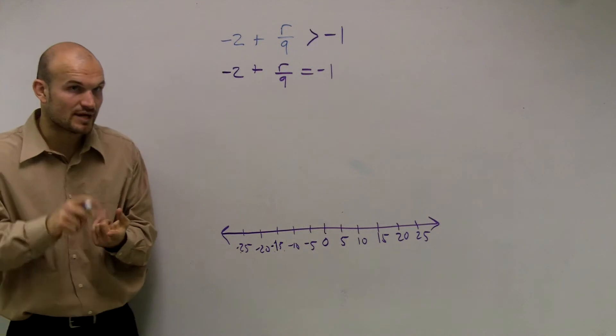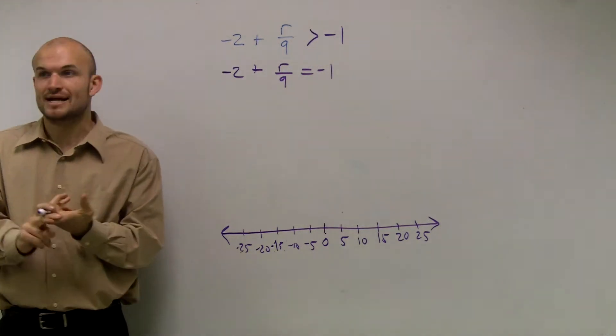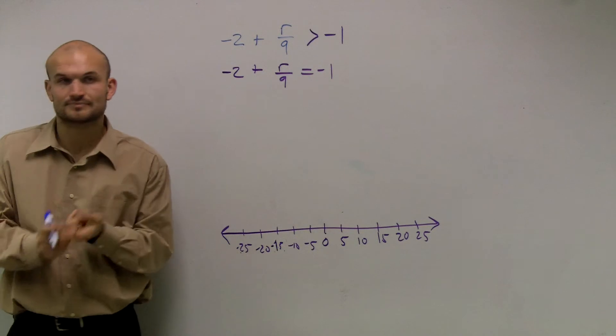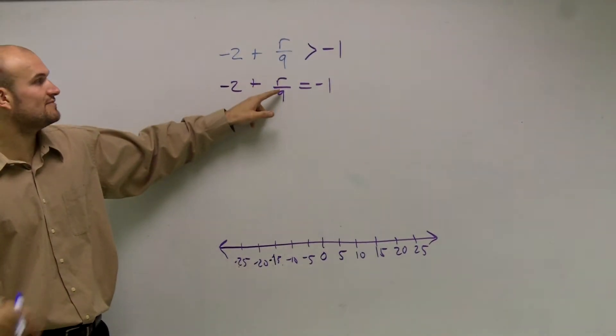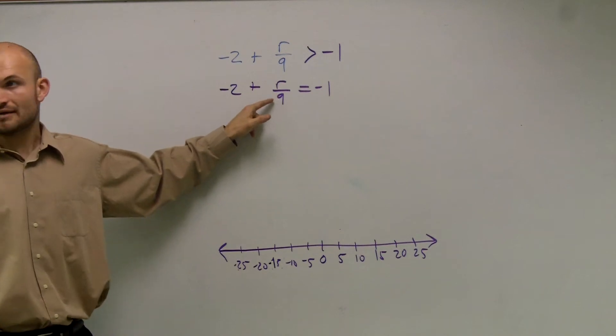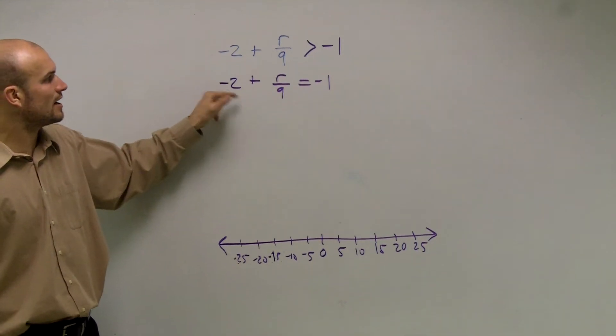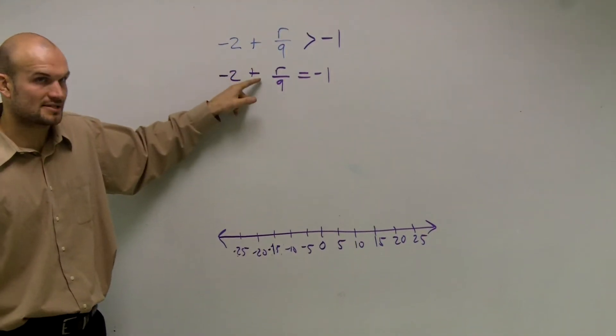The first thing we always undo is whatever is adding or subtracting to our variable. Now, we see my variable is being divided by 9, so I'm not going to do that first. Then I look at this and I say, all right, I have a negative 2 plus.